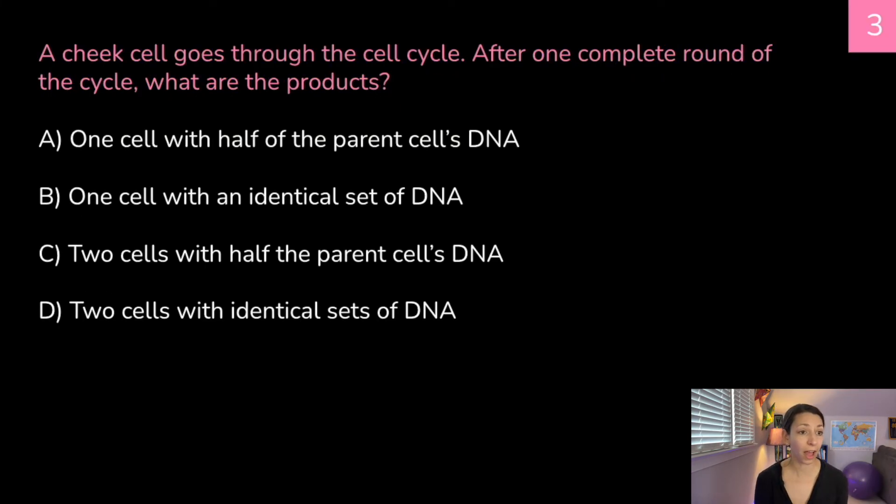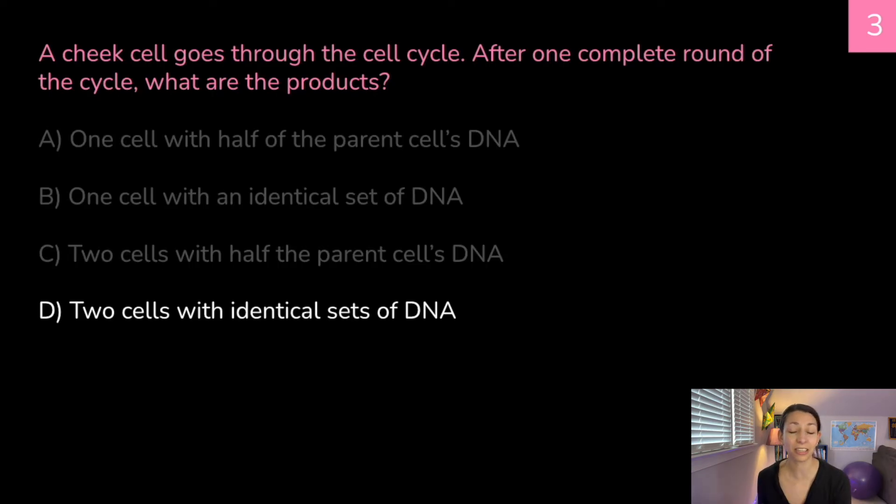A cheek cell goes through the cell cycle. After one complete round of the cycle, what are the products? A, one cell with half of the parent cell's DNA. B, one cell with an identical set of DNA. C, two cells with half the parent cell's DNA. Or D, two cells with identical sets of DNA. Think about it. Correct answer is D, two cells with identical sets of DNA. Remember, cheek cells are going to go through mitosis to grow. If we have a cut or an injury inside our mouth, we might be doing some repair as well. But after the parent cell divides, we'll have two cells, they'll still be diploid, and they'll have identical sets of DNA.